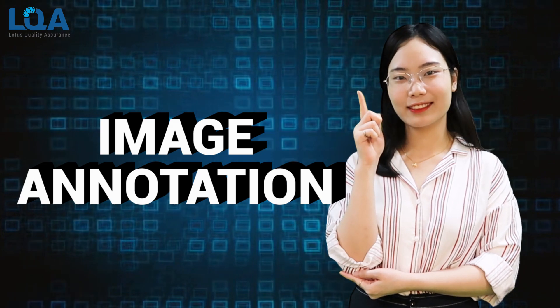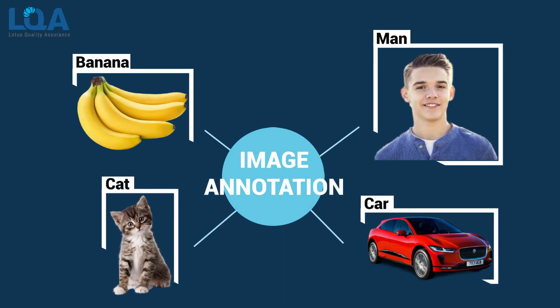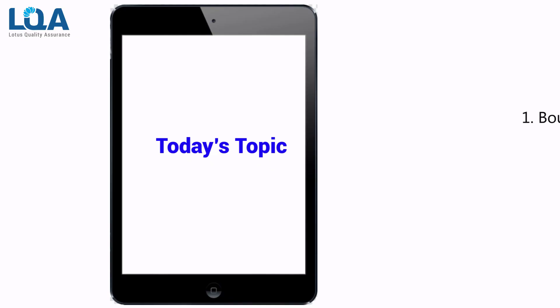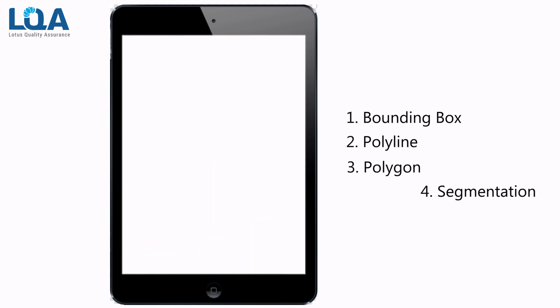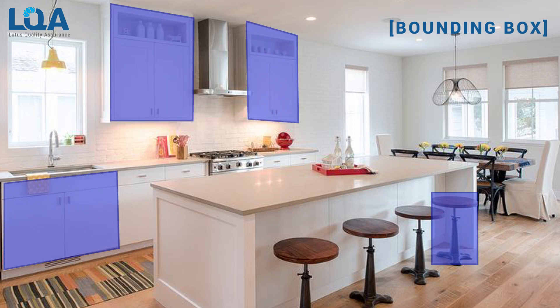Image annotation. Image annotation is simply the process of attaching labels to an image. Though there are multiple types of image annotation techniques, only a few are commonly used in the industry. So let's find out which ones are suitable for different types of perception-based models. First, bounding box. For bounding box annotations, annotators are given an image and are tasked with drawing a box around certain objects within the image.